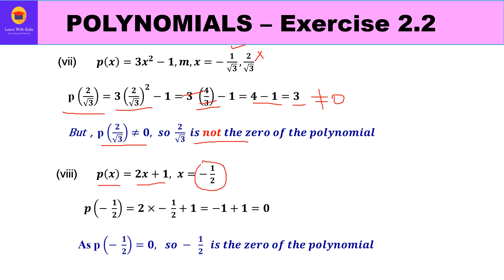For part eight, p(x) = 2x + 1, verify x = -1/2: p(-1/2) = 2(-1/2) + 1 = -1 + 1 = 0. Since we get 0, -1/2 is the zero of the given polynomial.